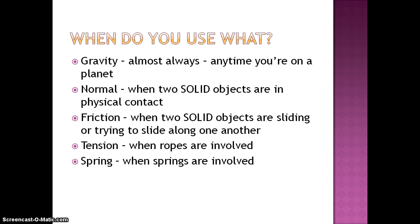So we have five different forces. The question is, when do you use which one? Gravity is almost always going to be used. Anytime you're on a planet, there's gravity. Even in outer space, if you're orbiting a planet, there's still gravity. Normal force is used when two solid objects are in physical contact with one another. It doesn't matter if they're moving. It doesn't matter if they're stationary. It doesn't matter if someone's pushing on it, trying to get them to move. Normal force exists as long as two solid objects are in physical contact.